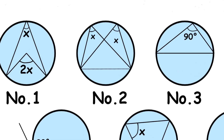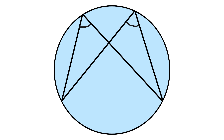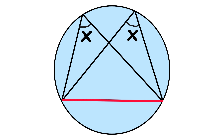The second circle theorem is the angles in the same segment theorem. Any angles drawn from the same arc in a circle are always equal, no matter where you place them. If they stand on the same arc, their angles match.